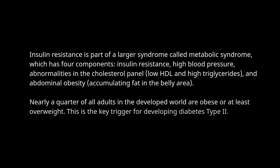Insulin resistance is part of a larger syndrome called metabolic syndrome, which has four components: insulin resistance, high blood pressure, abnormalities in the cholesterol panel — low HDL and high triglycerides — and abdominal obesity, meaning accumulating fat in the belly area. Nearly a quarter of all adults in the developed world are obese or at least overweight, and this is the key trigger for developing Diabetes Type 2.